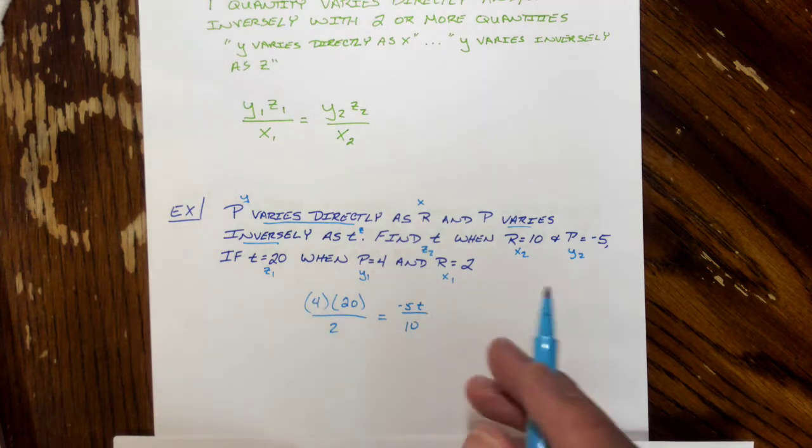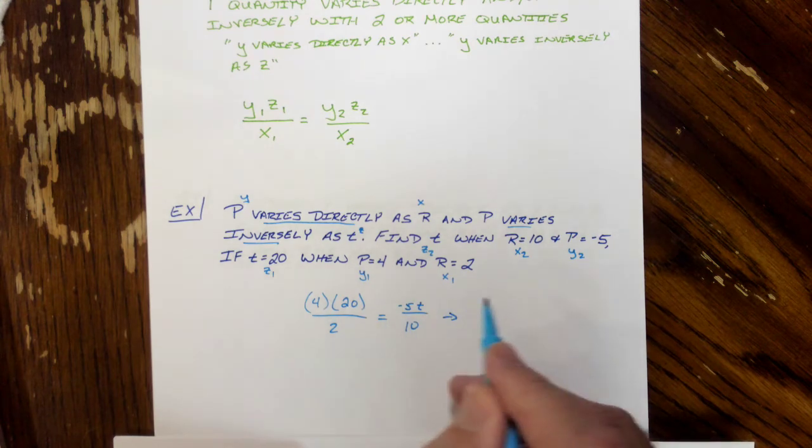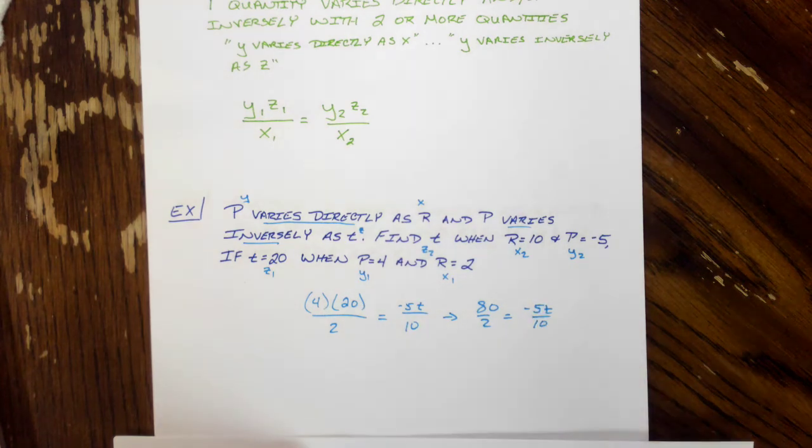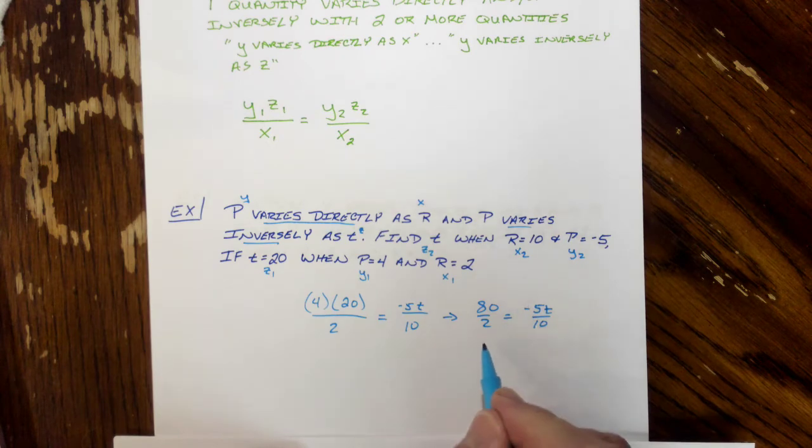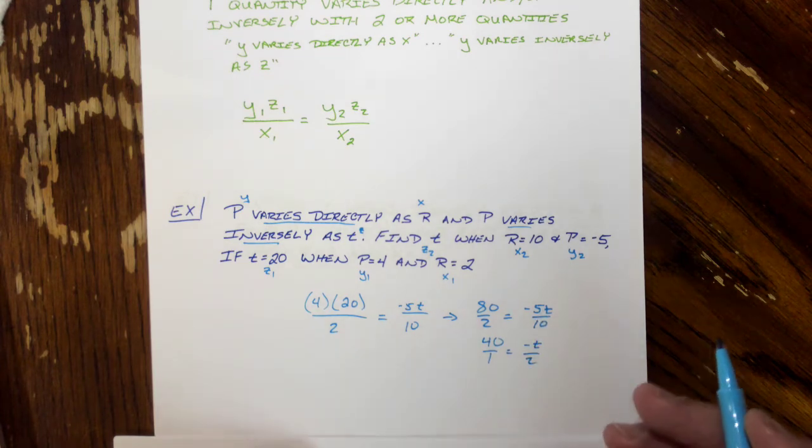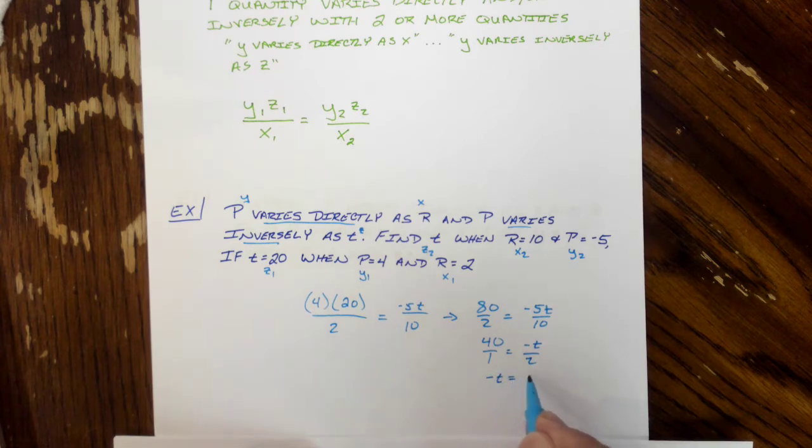So what do we see in all this stuff. So we look over here, 80 over 2 equals negative 5 T over 10 so you get your choices you can reduce the fraction you just stick with bigger numbers that's completely up to you. If I divide all this out I could have 40 over 1 equal to negative T over 2 and that's going to give us negative T equals 80 so T is equal to negative 80.